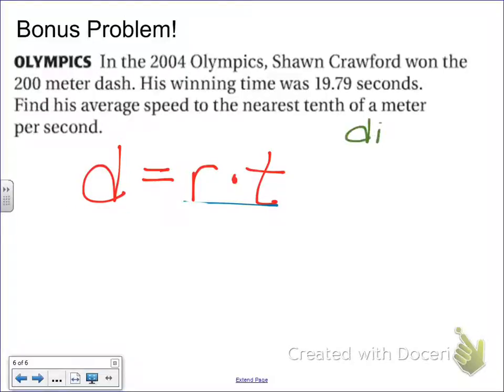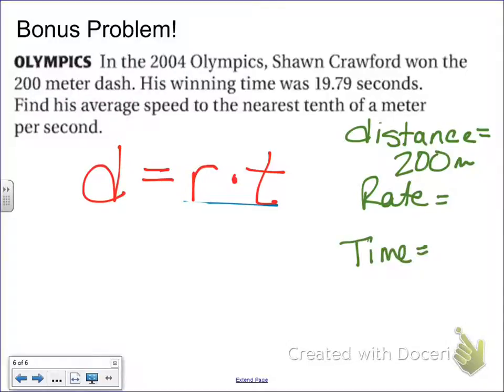Well, the first thing I know is the distance. So when I do the distance, does it tell me in my problem? Well, he won the 200 meter dash. So 200 meters is my distance. All right, let's find out rate. Now, do we know what his rate is? I can't tell if it's the seconds or what it is, so I'm going to leave that blank. Now, let's look at time. Do I know how much time it took him?